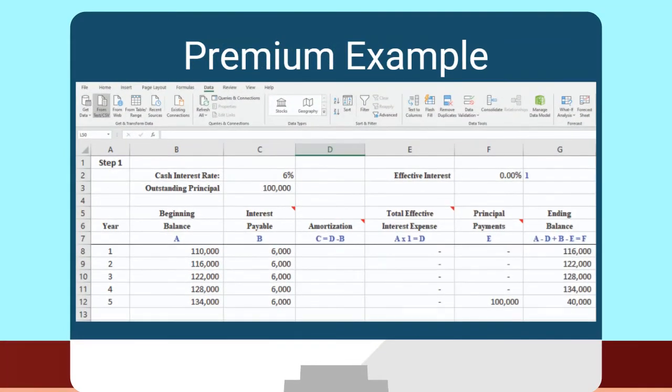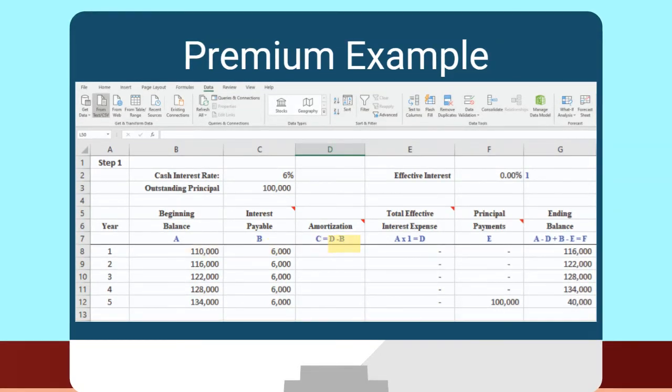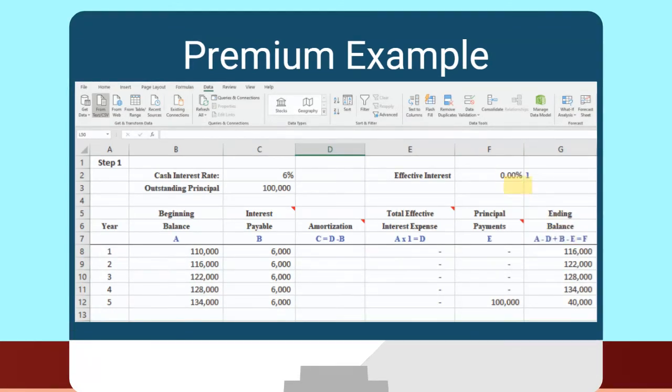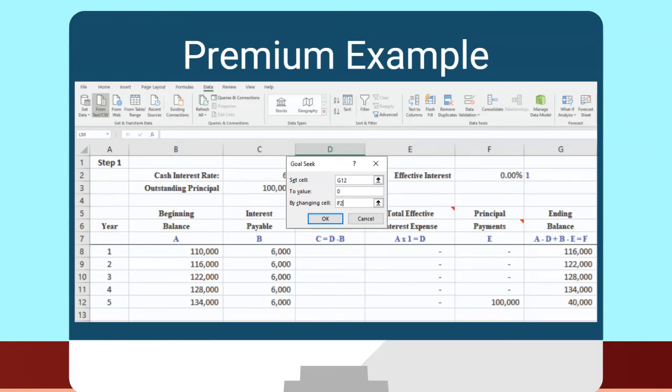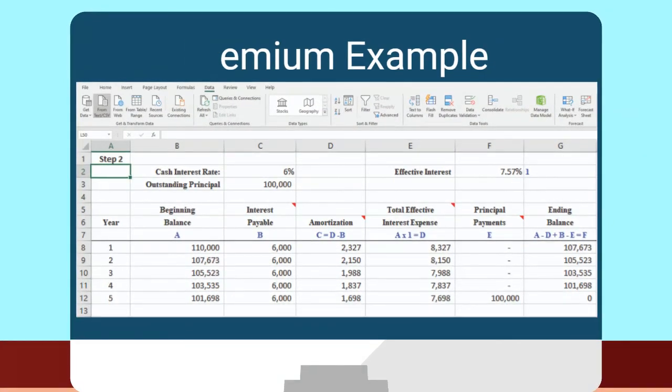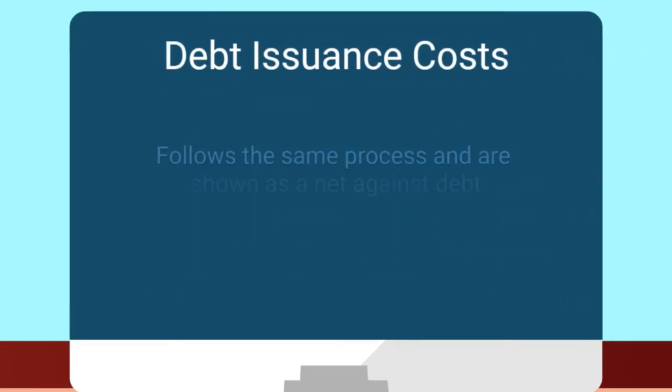Yeah, let's set up that same worksheet, but for a premium. This time, your beginning balance is $110,000. You need to change your ending balance formula to subtract the amortization. Make your effective interest zero for now. Let's run that same goal seek. Wow, that makes it seem so easy. Yep. And thanks to the new guidance, you would do the same thing with your debt issuance costs.